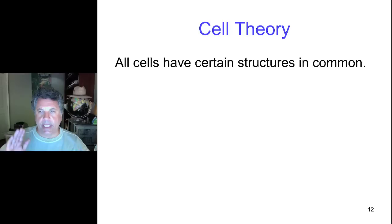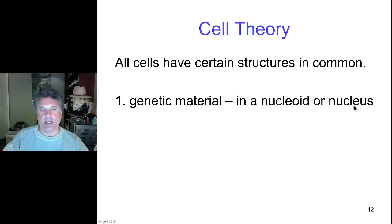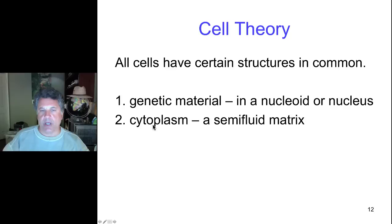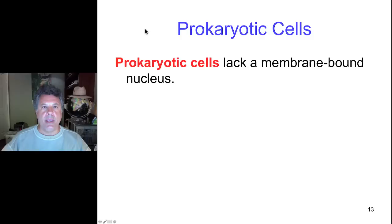Let's continue with cell theory. All cells - prokaryotic, eukaryotic, whatever - have certain structures in common. First, there's the genetic material: in prokaryotes it's found in a nucleoid region, but in eukaryotes it's partitioned in a double-membrane organelle called the nucleus. The rest of the cell is referred to as the cytoplasm or cytosol, a semi-fluid matrix full of molecules. And finally, all cells have a plasma membrane, which is a phospholipid bilayer that defines the boundary of a cell.